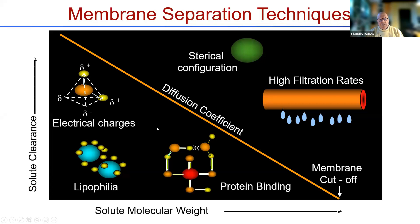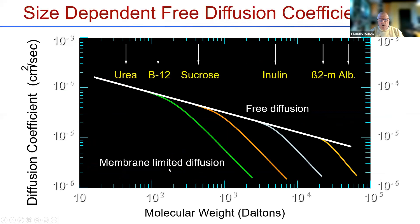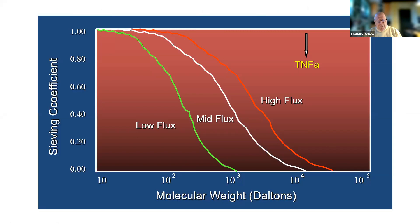In mass separation techniques by barrier, we mostly use diffusion. But the free diffusion coefficient decreases progressively as solute molecular weight increases. You may have a different impact depending on protein binding, high filtration rates, or electrical charges. But basically, for larger solutes, diffusion is not efficient. And if you impose a membrane to the free diffusion in water, you further reduce the free diffusion coefficient through the membrane. So another method is required, and it is convection.